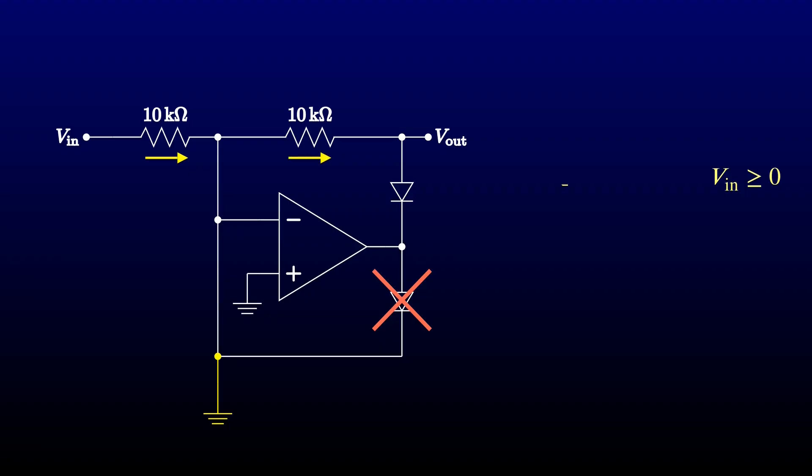For the currents to balance, the output voltage has to be the negative of the input voltage, since the input and feedback resistor are equal. The op-amp's output needs to be one diode drop below that.